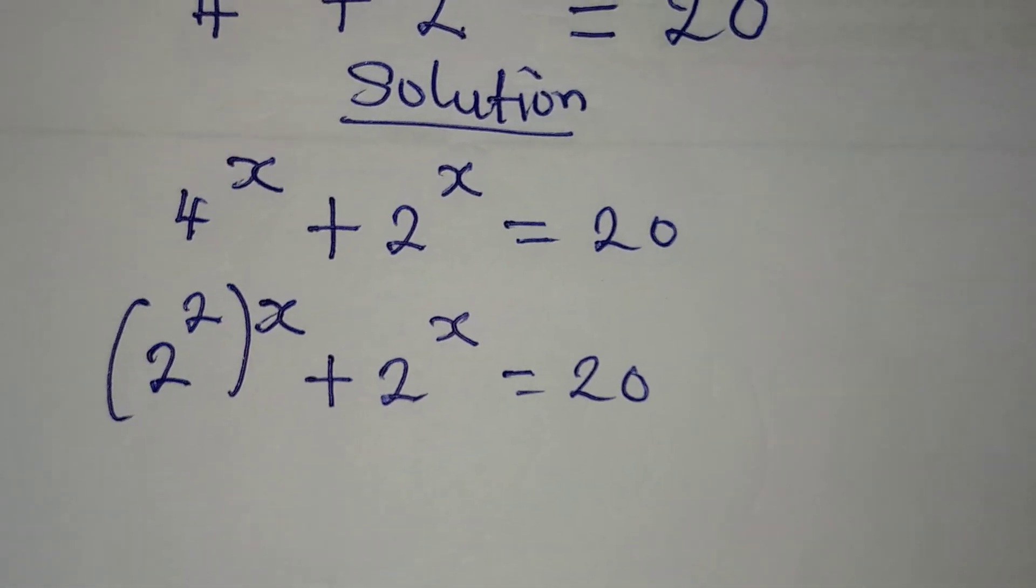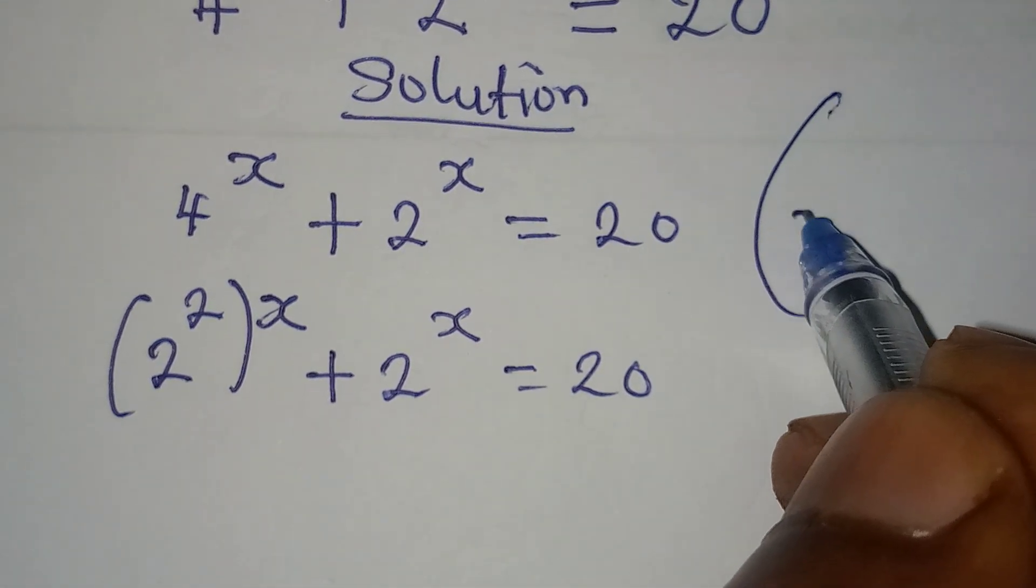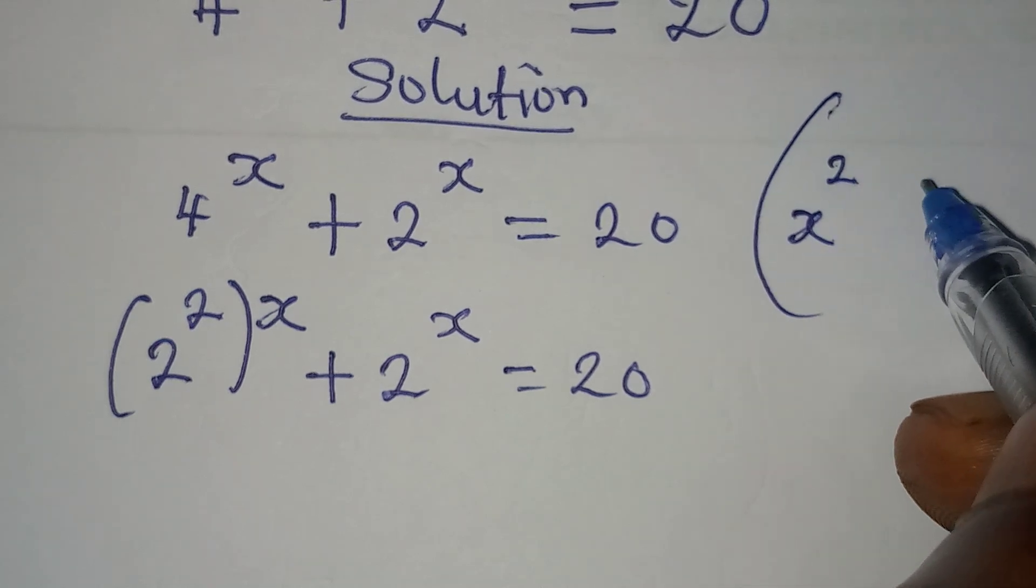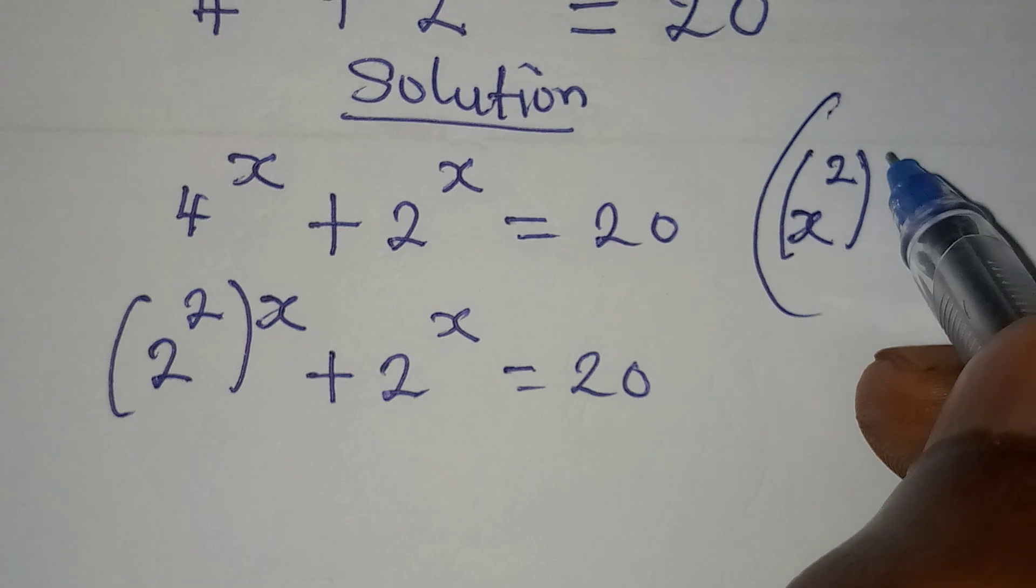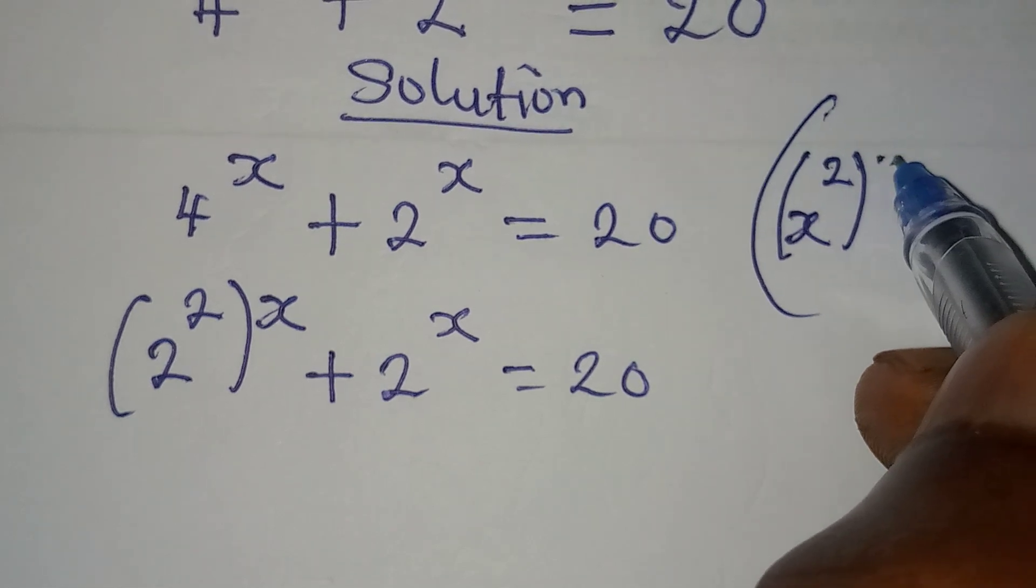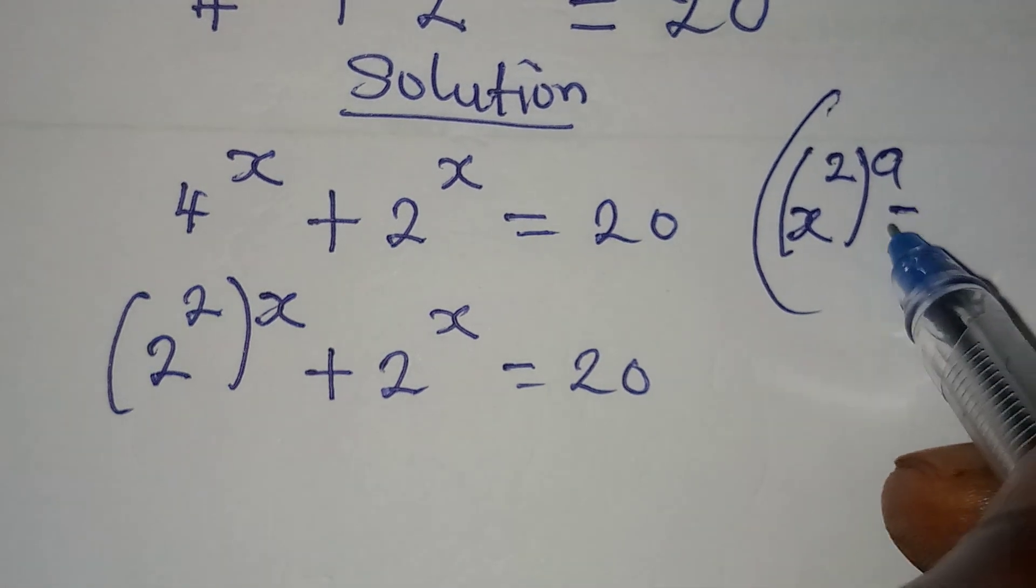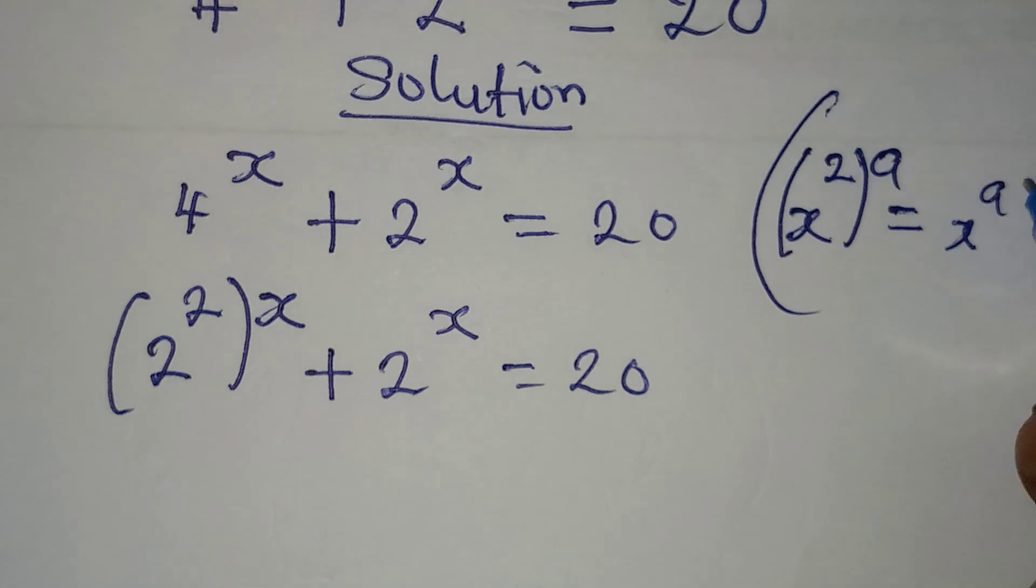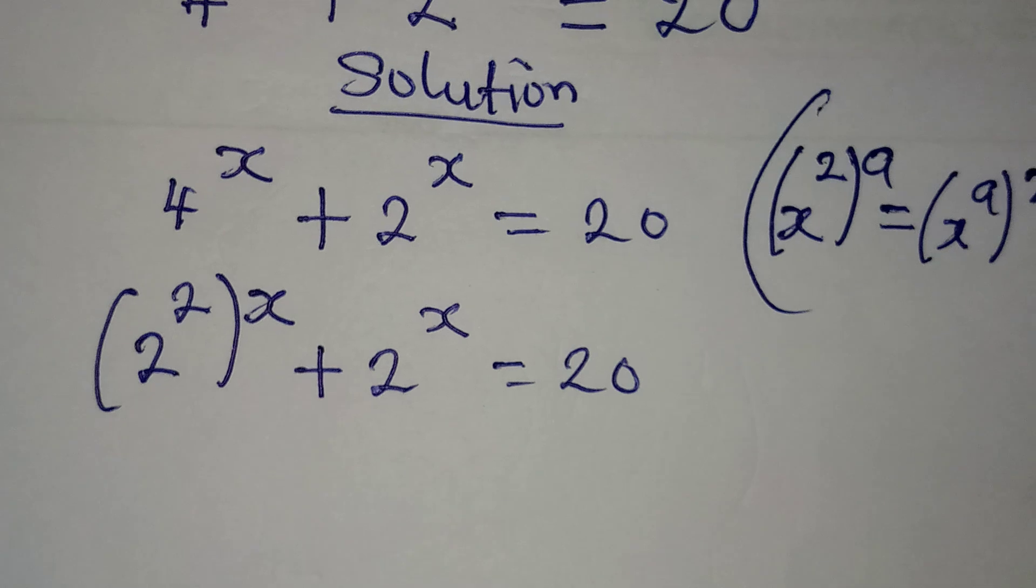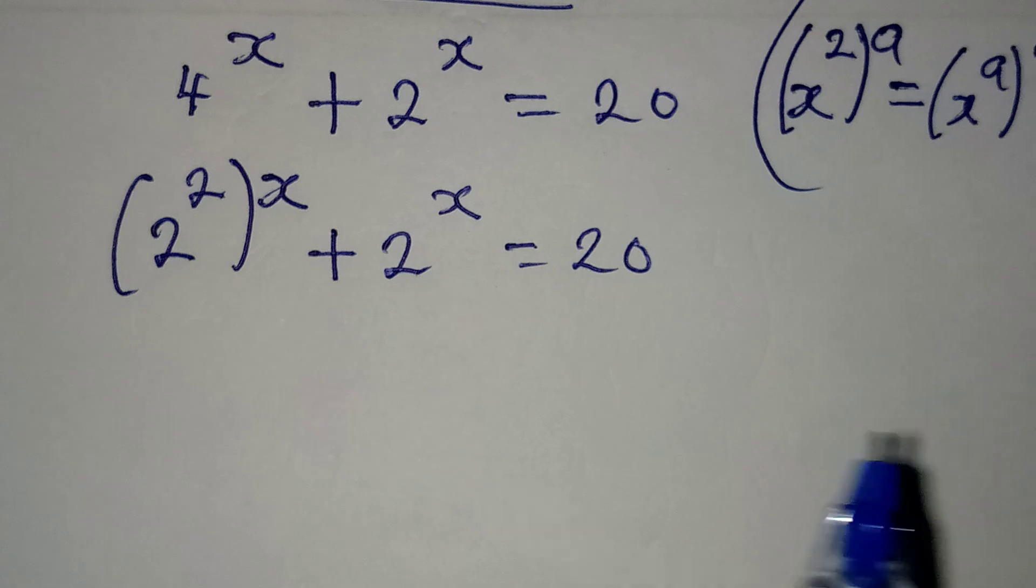And then remember this law that says if you have x to the power of 2, and then you have, let's say, a outside, you can always turn it around so that you have x to the power of a, then you have 2 outside. And that's what I'm going to apply to this now.